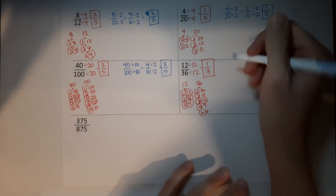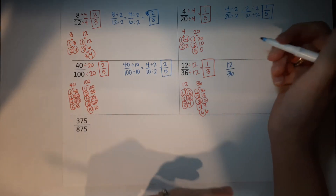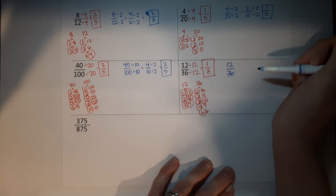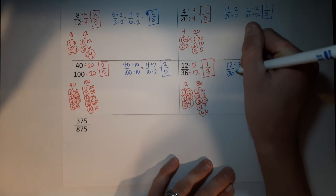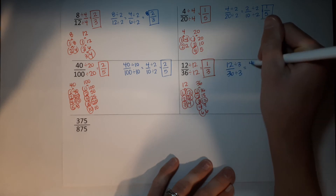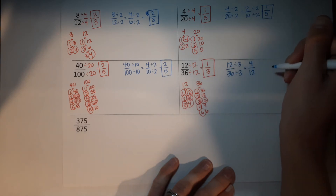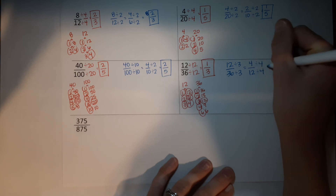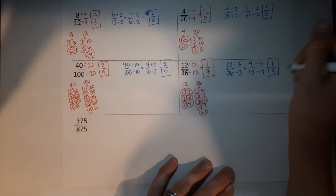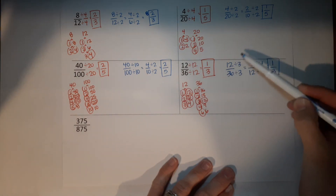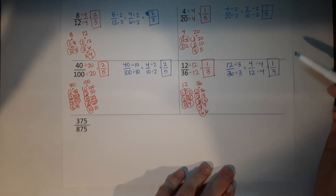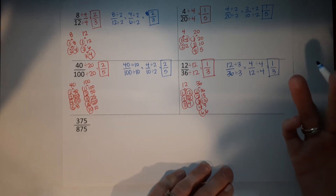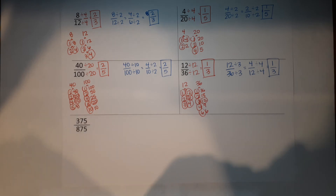Now let me show you the way I probably would have solved that — you could call it the lazy way. I probably would have noticed that three went into both of them first. So twelve divided by three gives me four. Thirty-six divided by three gives me twelve. And then I probably would have noticed that four goes into both of these. Four divided by four gives me one. Twelve divided by four gives me three. You might have noticed they were both even and done six eighteenths, then noticed those were both even — anyways, there are different ways to do it as long as you get to the right answer. One third for that one.